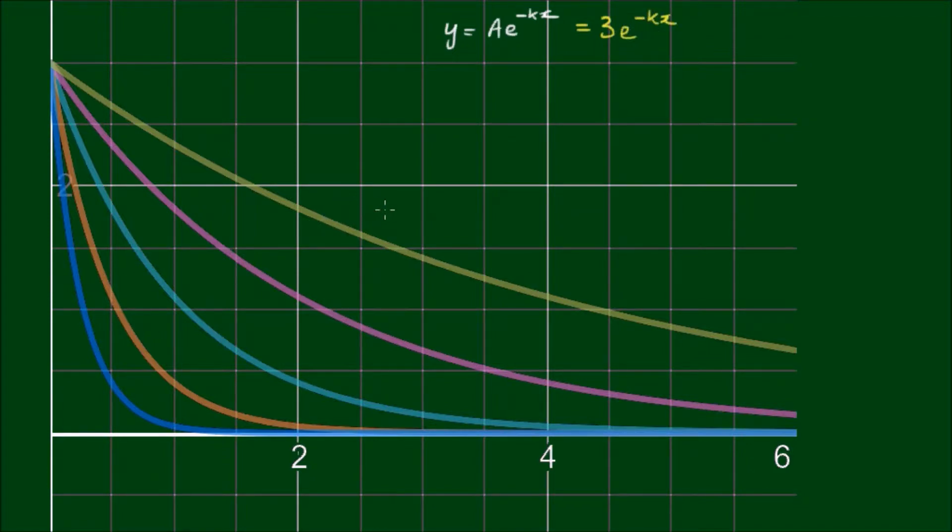This olive curve here is when k equals 1/4. The magenta curve is when k equals 1/2. This cyan curve here is when k equals 1. The orange curve k equals 2. And the blue curve is for k equals 4.